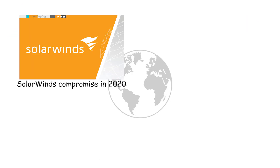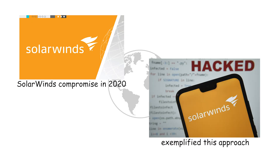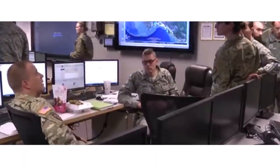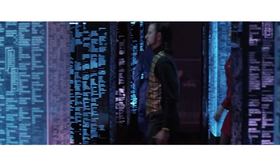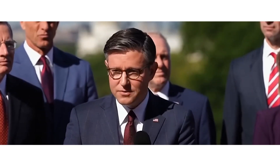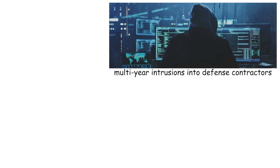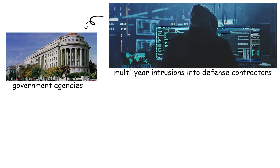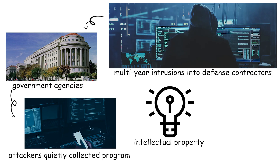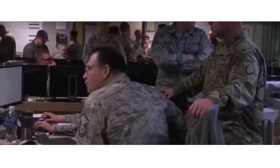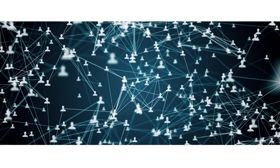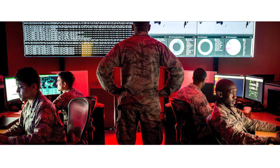The SolarWinds compromise in 2020 exemplified this approach. Attackers implanted malicious code in a widely used IT management platform, granting months of covert access to U.S. agencies and defense contractors. The breach quietly funneled sensitive information out while remaining undetected, giving adversaries insight into government operations. Historic cases include multi-year intrusions into defense contractors where attackers quietly collected program files and intellectual property that later accelerated adversary development. Stolen designs shorten development cycles, reveal vulnerabilities, and provide targeting intelligence for kinetic or cyber strikes.